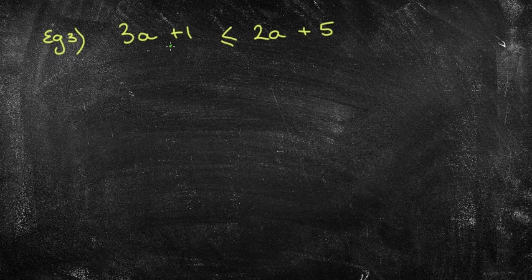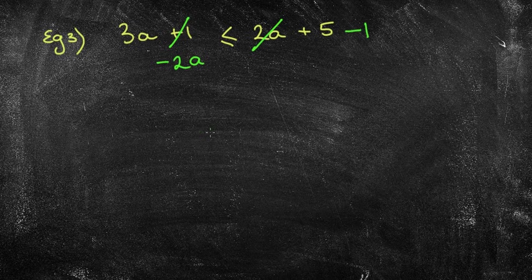Okay, so hopefully you recognize I'm going to take the 1 to the right-hand side, or subtract 1 from both sides. I want to get the letters on the same side. I'm going to take the 2a and put it on the left-hand side. So I'm going to take 2a away from both sides. I've now got 3a take away 2a, which is just 1a, is less than or equal to 5 take away 1 is 4. And I've hit my solution fairly quickly.